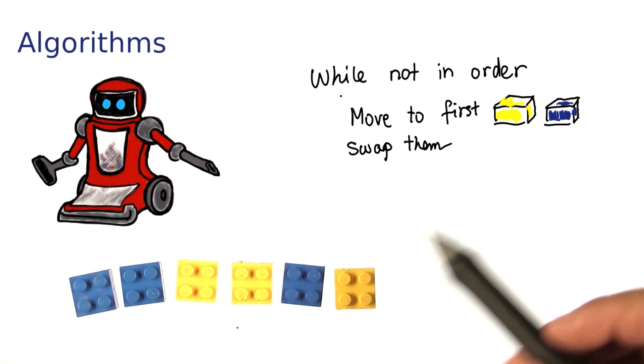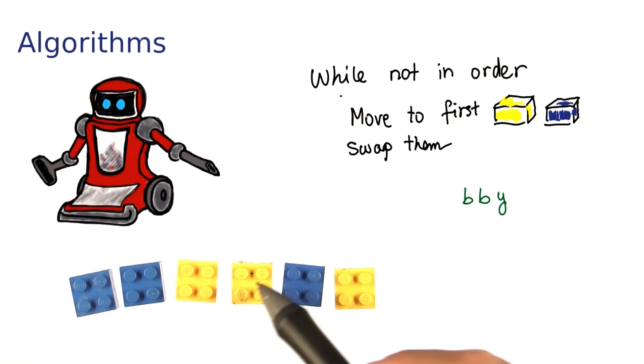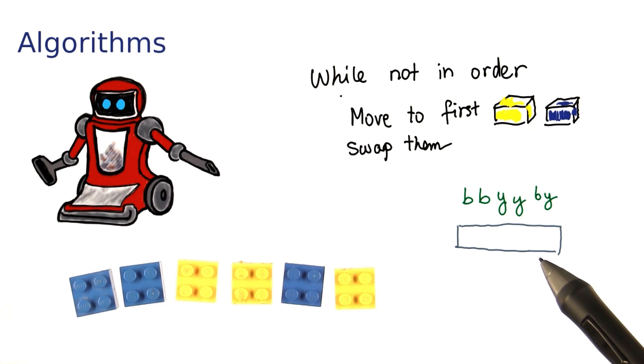Now, I'd like you to try this. If I write a B for blue, and a Y for yellow, tell me the sequence of the blocks after the next swap, and the next one after that.